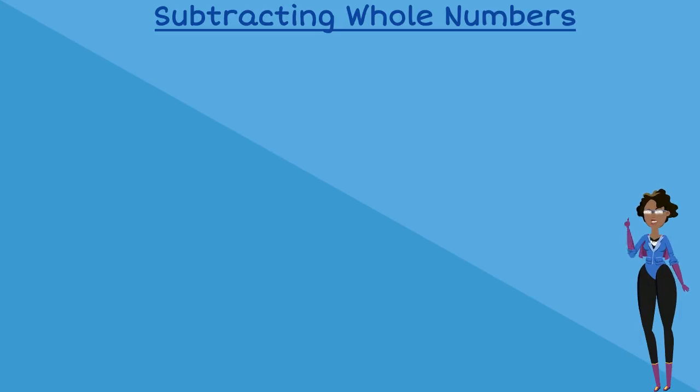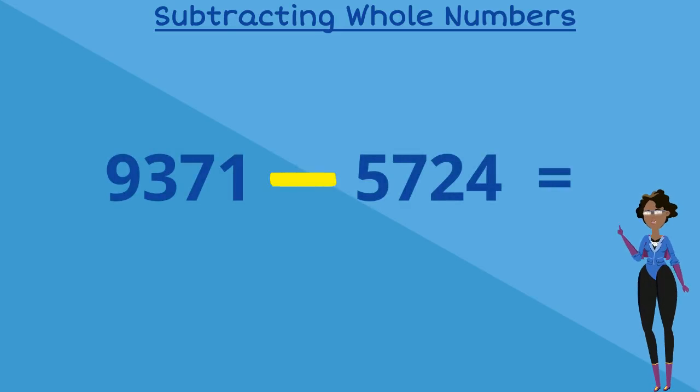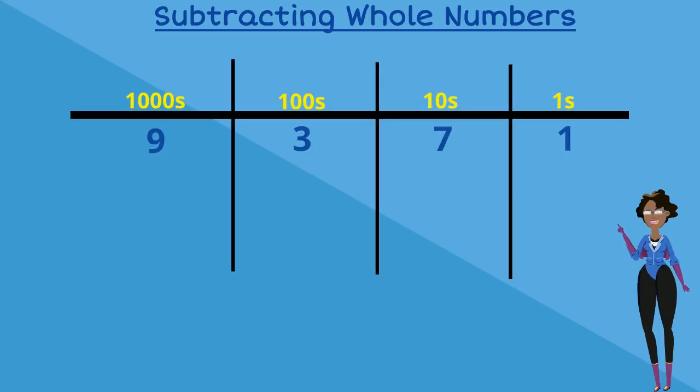Our first example question: 9371 subtract 5724. Let's put our number sentence into our place value chart and start to subtract from our ones column.